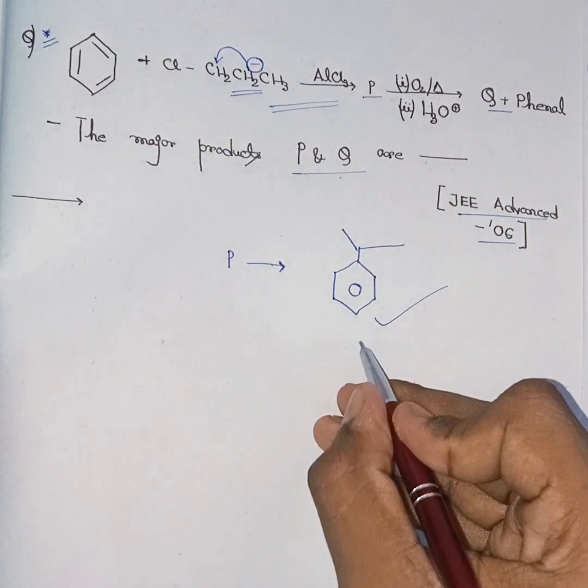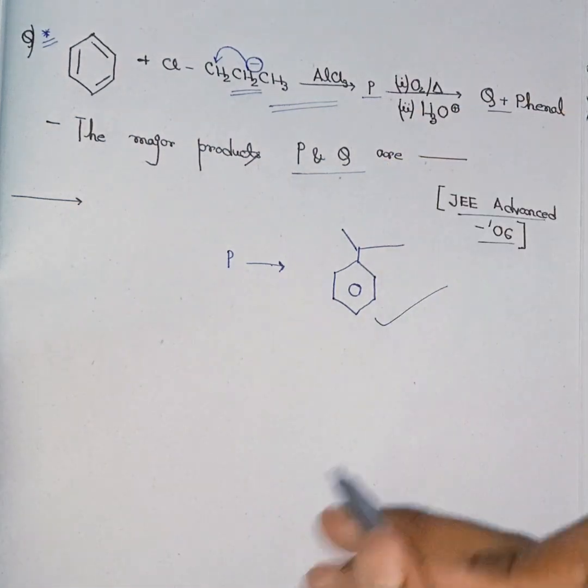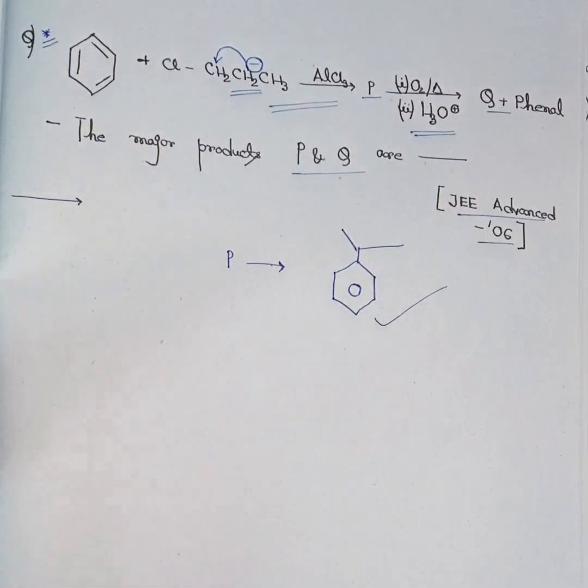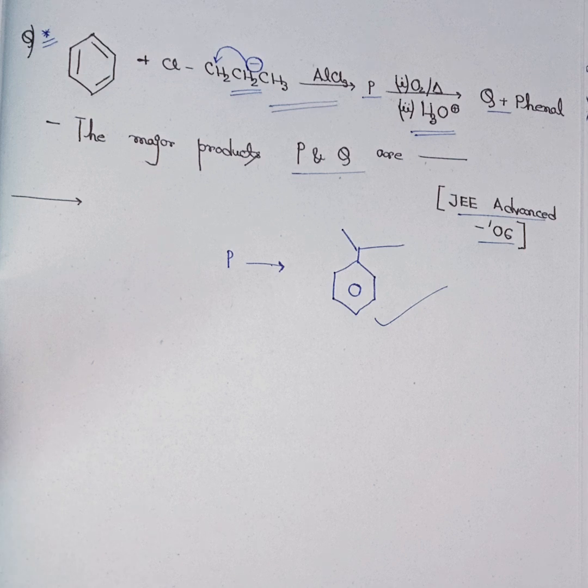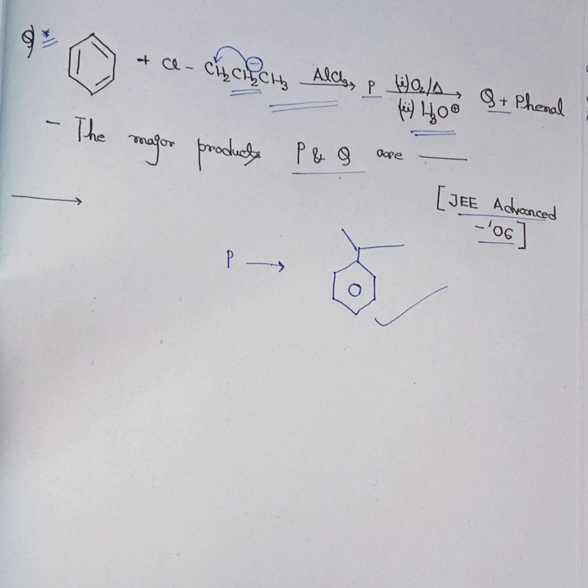After this, when this reacts with oxygen and heat, and then H3O plus, if you can remember the alcohol, phenol, ether chapter of class 12, then you can know that there is a very well-known reaction in this chapter called cumene formation, cumene reaction, and then phenol and acetone formation.